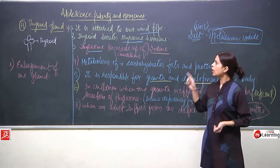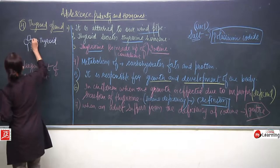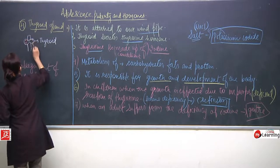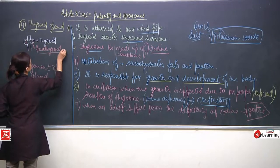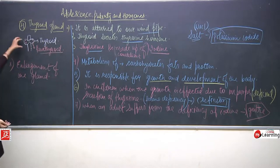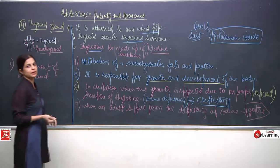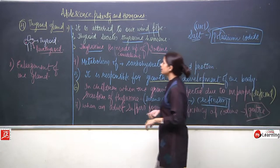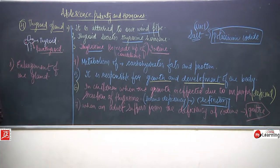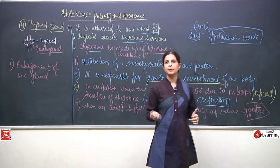That was all about the fourth gland, thyroid gland. Now, inside the thyroid gland only, four parathyroid glands are present. Inside the thyroid gland which is attached to the trachea or windpipe, four parathyroid glands are present. We will now talk about what these parathyroid glands are, why they are important, and which hormone they secrete. Please note this down.